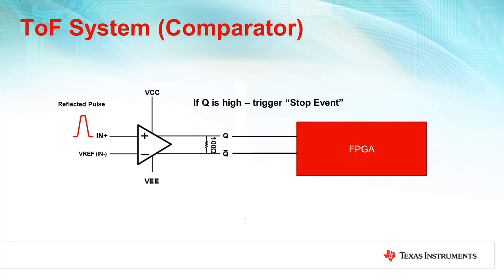With a comparator, one of the inputs is tied to a reference voltage. The light pulse expected in the reflection from the target object is then measured and compared to this reference voltage. If the reflected light pulse crosses the reference threshold, the distance to that object can be measured. The comparator will output high, denoting the stop event, and downstream devices can compute the distance to the target from this trigger.